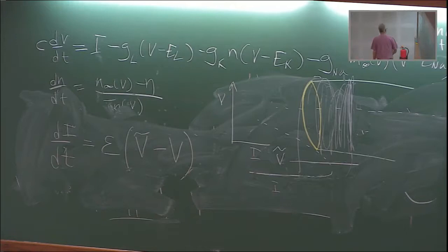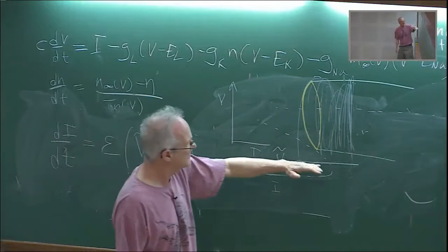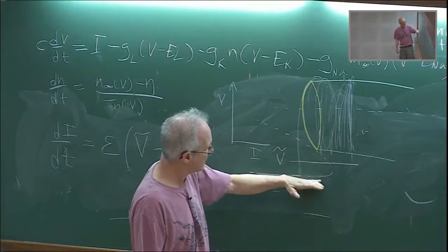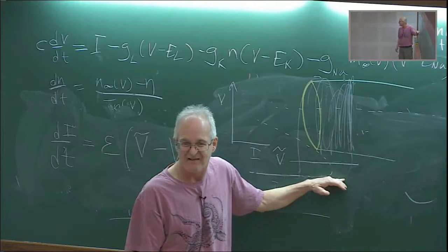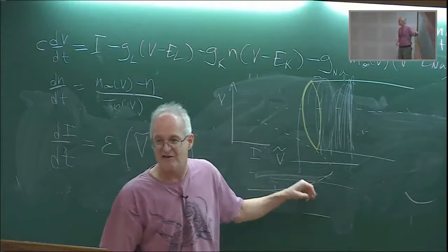You can do quite a bit of mathematical analysis. What happens is you change V tilde. If V tilde is down here, then you'll just stay at a fixed point all the time. If you put V tilde there, then you just stay at the fixed point.